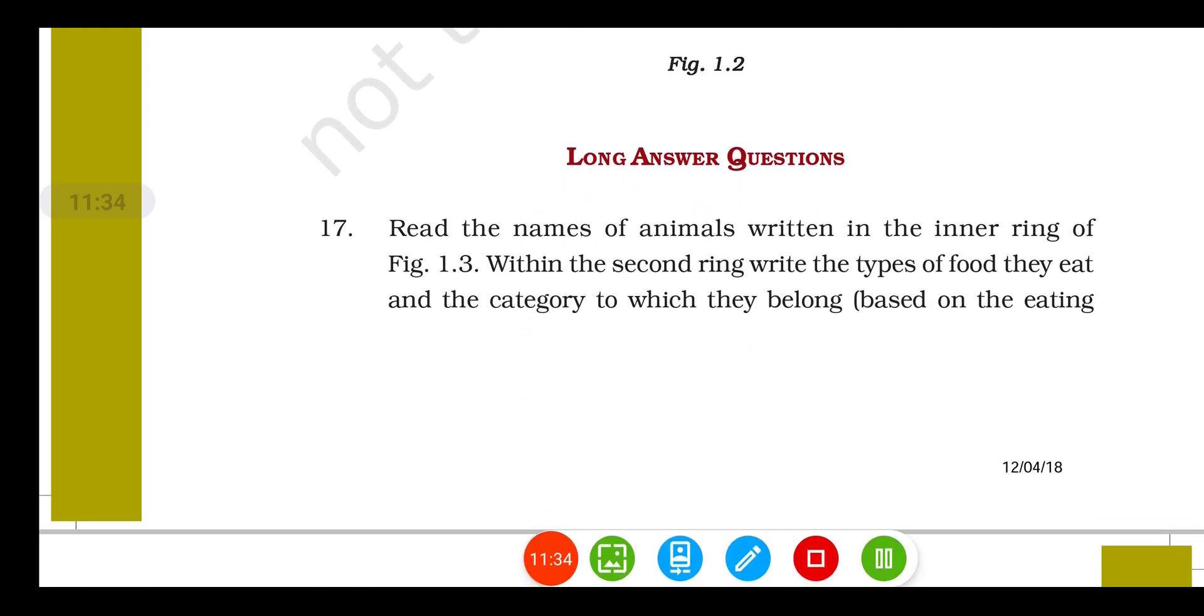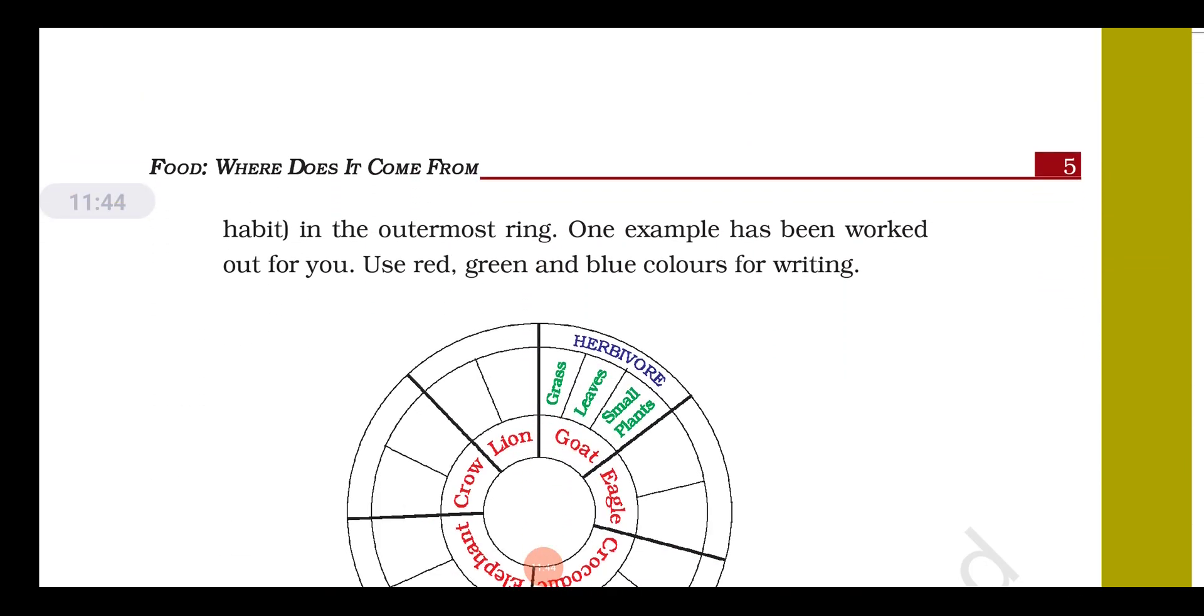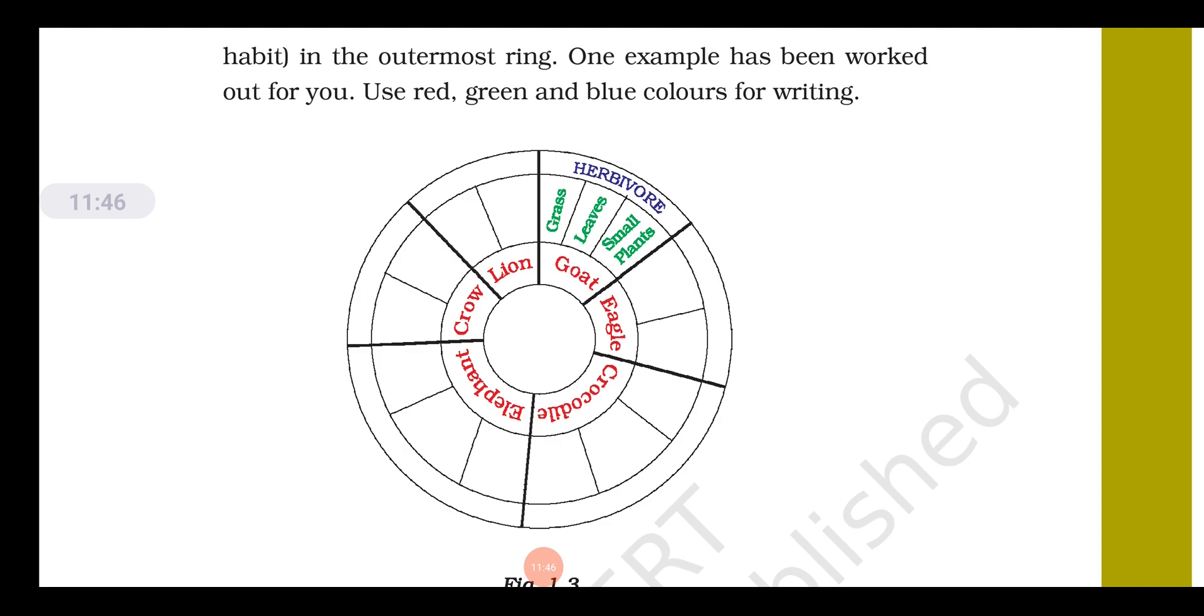Question number seventeen: read the name of the animal written in the inner ring, and in the second ring the type of food they eat, and category to which they belong. You see this is the ring given - in the inner ring list of animals is given with red color. In the middle ring, list of organisms is written which they eat. And in the outermost ring, category to which they belong we have to write.